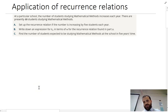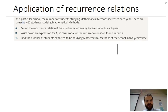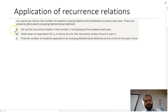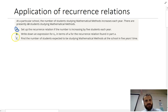We're looking at an application of recurrence relations this time. We're going to do three things here. We're going to set up a recurrence relation — that's part A. We're going to write down an expression for T(N) in terms of N, which is a bit different to a recurrence relation. And then we're going to use those to solve a problem.